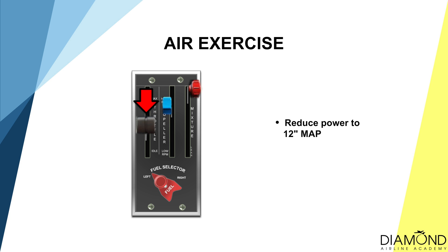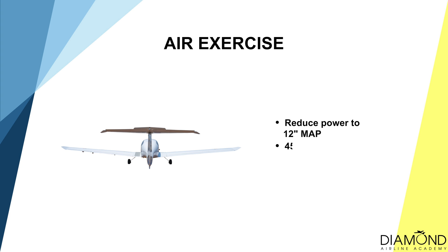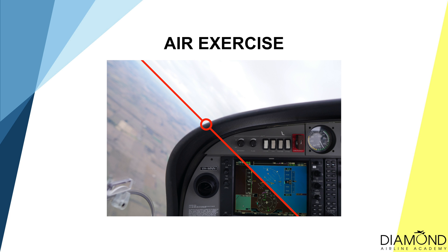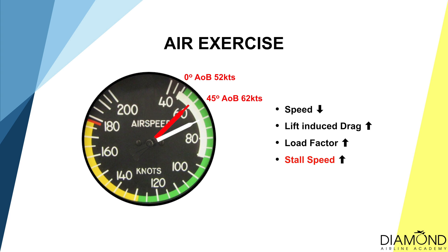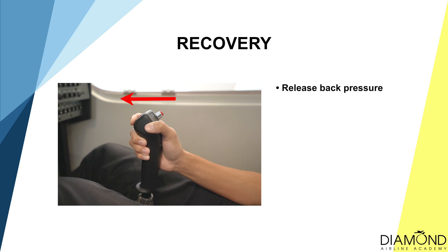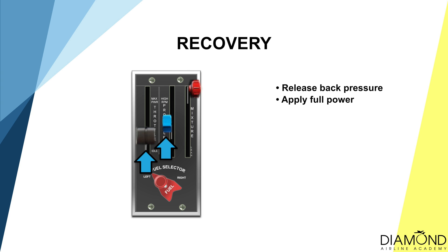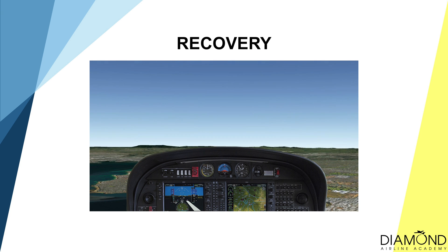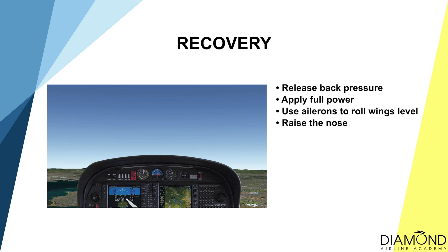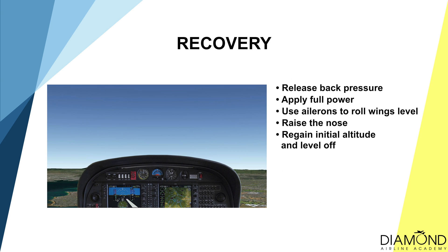To practice steep turn stall in the air, firstly reduce power to 12 inches of manifold pressure. At the same time, start to bank the aircraft to 45 degrees. As the aircraft is turning, apply more back pressure to gradually maintain altitude. Because of the lack of power and the increase in drag, speed will be washing off rapidly. During a steep turn, stall speed increases. When the speed of the aircraft reduces to the stall speed, the aircraft will stall during the steep turn. When the aircraft stalls, it will pitch down and descend rapidly. To recover: firstly, reduce the back pressure; at the same time apply full power. When the aircraft has been unstalled, use ailerons to roll the wings level. As the aircraft regains normal attitude, start to apply more back pressure to raise the nose to a climbing attitude to get back to the initial altitude.